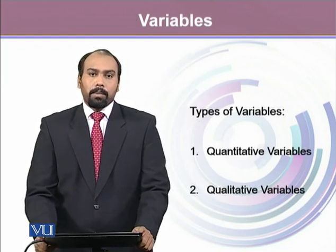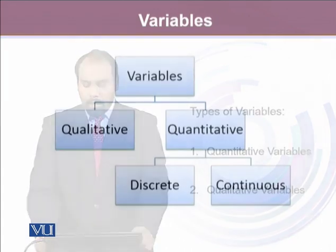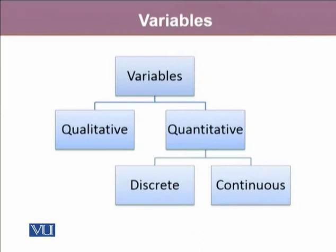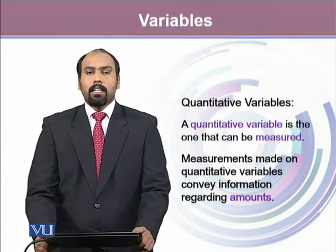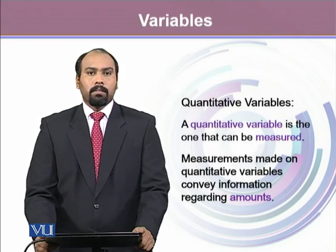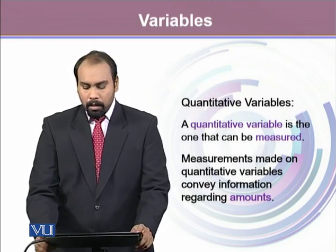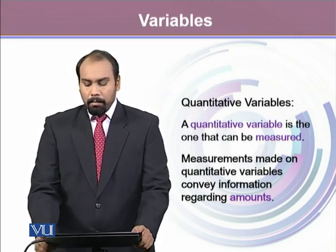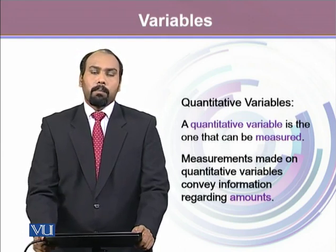Variables are mainly of two types: quantitative and qualitative variables. Quantitative variables are further divided into two categories — discrete variables and continuous variables. Quantitative variables are usually known as measured variables. These are numeric variables which contain some magnitude for every observation, and measurements made on quantitative variables convey information regarding the amount of some value.